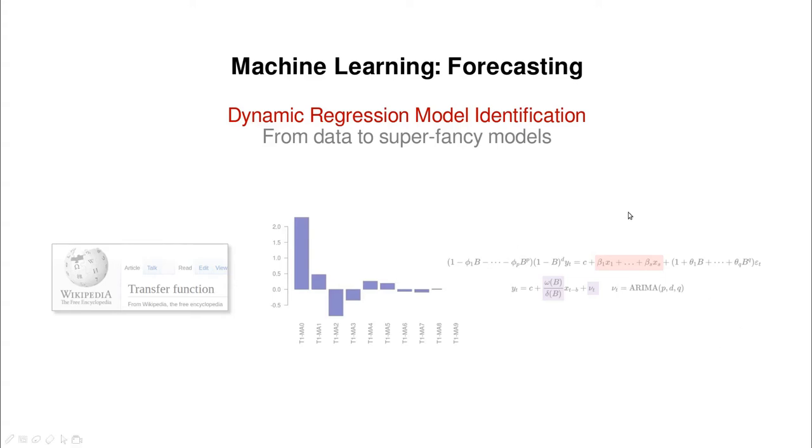Okay, in the last video we saw these fancy models that we call dynamic regression models. The idea was that you can have some kind of differences and some autoregressive part into the output, but also some autoregressive part into the input, and of course we're going to include this situation in which we have ARMA noise.